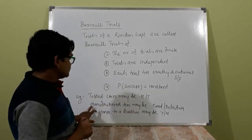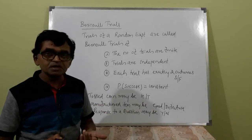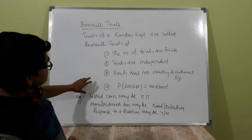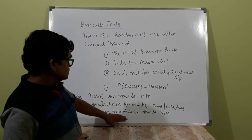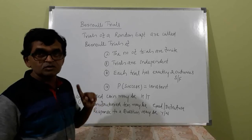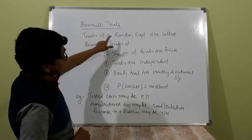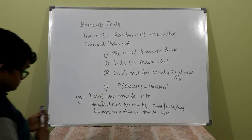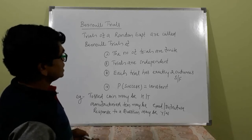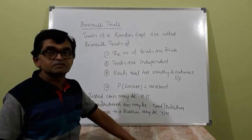Examples include: tossing a coin — head or tail; a manufactured item — good or defective; response to a question — yes or no. These are categorized into only two types. The outcomes are classified as success or failure. Such an experiment is called a Bernoulli experiment or Bernoulli trial. The trials of a random experiment are called Bernoulli trials if the number of trials are finite, trials are independent, and each trial has exactly two outcomes — either success or failure.